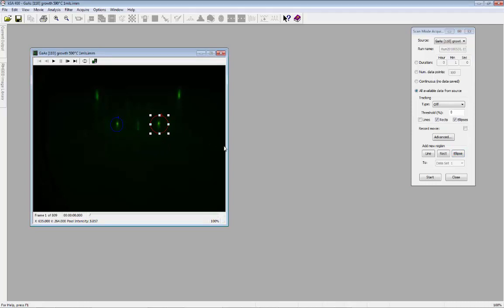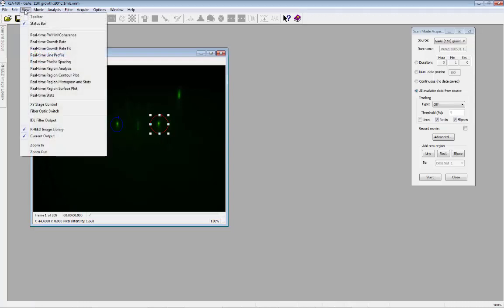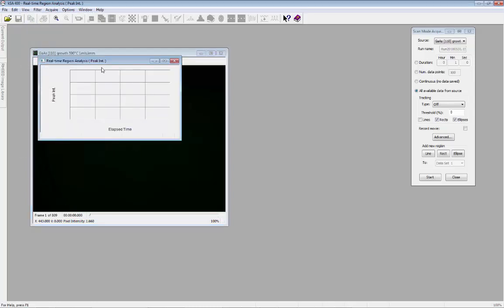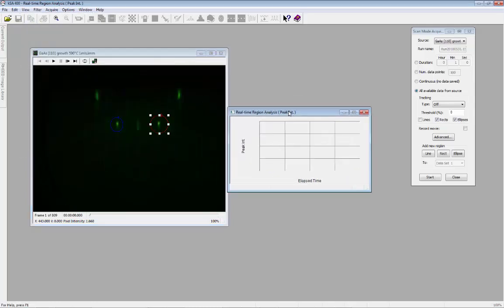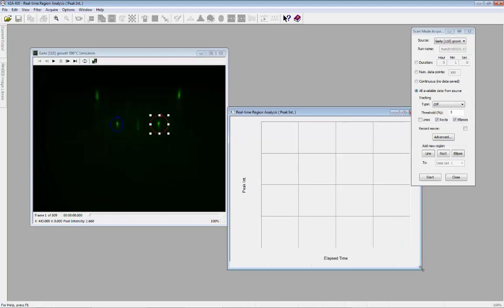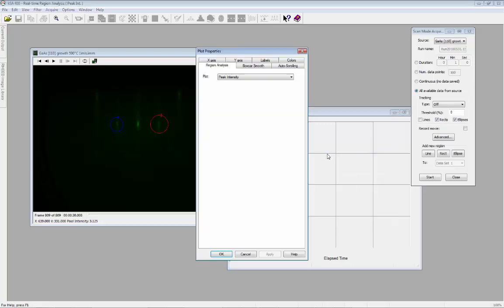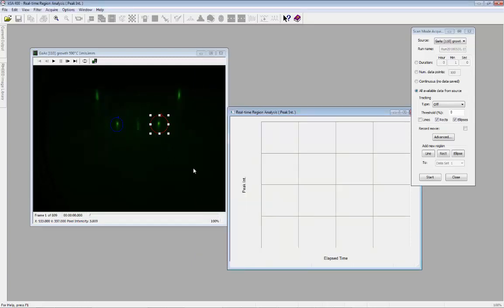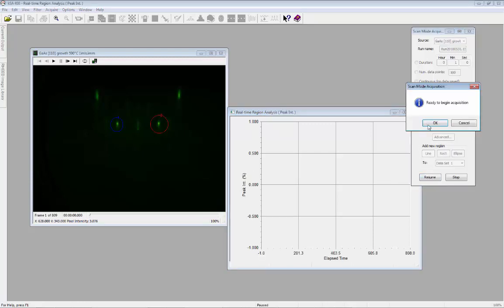From the View menu, select real-time region analysis. Right-click, select Properties, then select the Region Analysis tab and choose the value to plot. Ensure that the movie is rewound to the beginning and then press Start. Select OK to begin the acquisition.